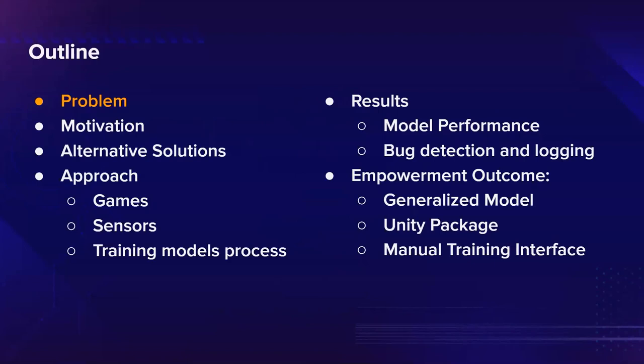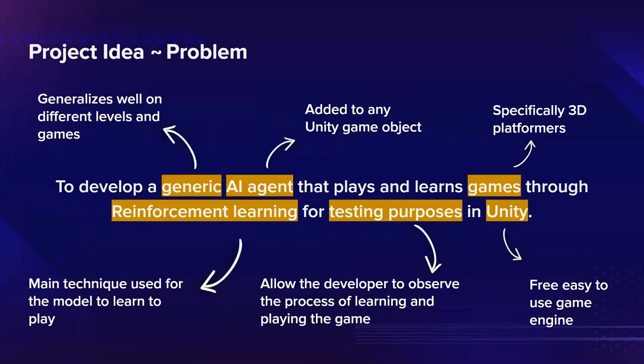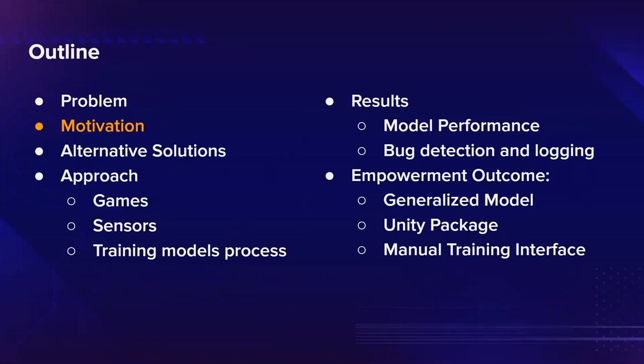This is an outline of what we're going to be going through in our presentation, detailing every section as we go along. For the first section, the problem, we define it as developing a generic AI agent that plays and learns specifically 3D platformer games through reinforcement learning for testing purposes in Unity. Our main aim was to develop a generic AI agent able to generalize relatively well on different levels or games within the 3D platformer genre, using reinforcement learning, to be used by developers for testing purposes in the Unity engine.